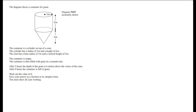For our first question, the diagram shows a container for grain. The container is a cylinder on top of a cone. The cylinder has a radius of 3 metres and a height of 8 metres. The cone has a base radius of 3 metres and a vertical height of 4 metres. The container is empty and is then filled with grain at a constant rate. After 5 hours, the depth of the grain is 6 metres above the vertex of the cone, and after 9 hours it is full.